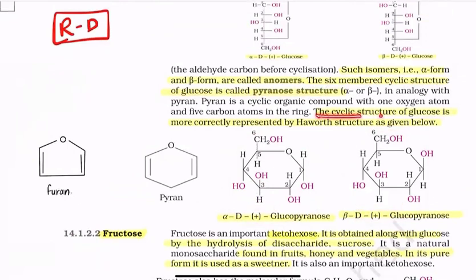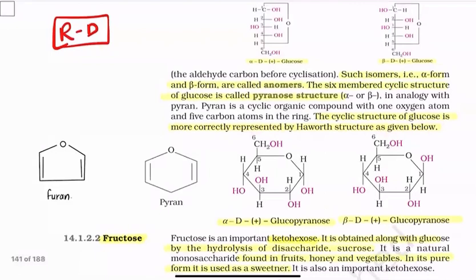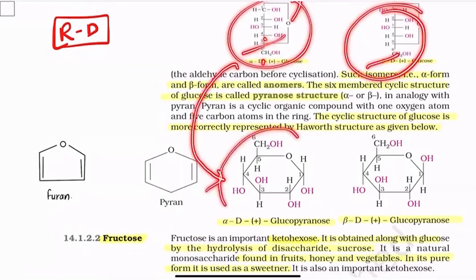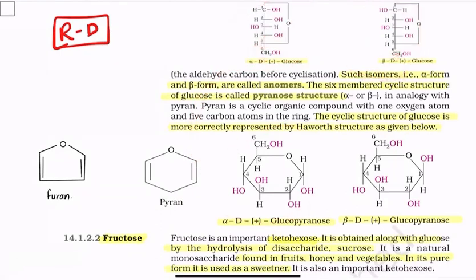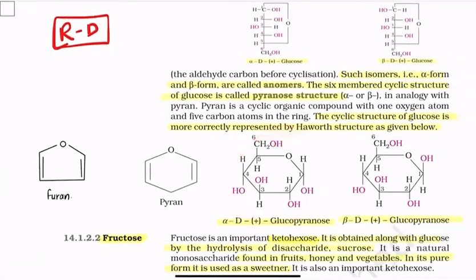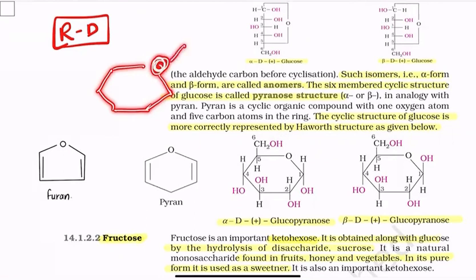The cyclic structure of glucose is more correctly represented by the Haworth structure. In the Haworth projection, the six-membered ring is shown with oxygen at the extreme top right.